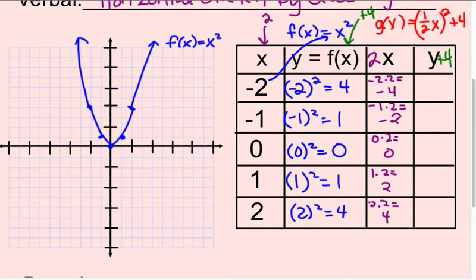Now let's do the y. We're going to add 4 to every y value in this second column. So 4 plus 4 is 8. 1 plus 4 is 5. 0 plus 4 is 4. 1 plus 4 is 5. 4 plus 4 is 8.